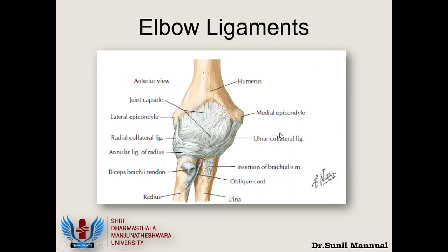Don't worry about all the labels in this Netter diagram. I just want you to focus on three structures. On the medial side is the ulnar collateral ligament, akin to the medial collateral ligament of the knee. On the lateral side is the radial collateral ligament, similar to the lateral collateral ligament of the knee. There is a lot of similarity between the elbow joint and the knee joint.